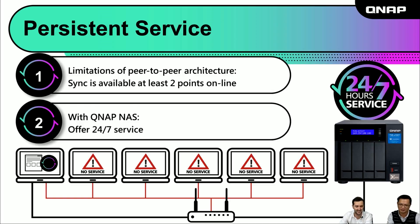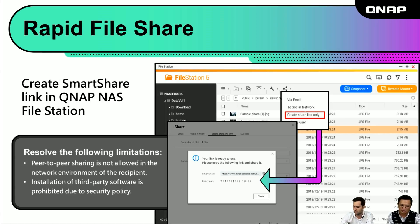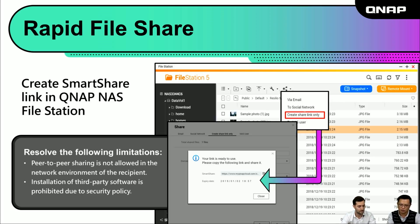File sharing is a very important element of synchronization. ResilioSync has its own link to share files, but in some scenarios it may not be convenient — for example, if the target user is in an environment that doesn't allow P2P protocol, or the user cannot install the software due to security issues, especially in the financial industry. In these cases, we can generate a smart sharing kit in QNAP NAS. This function is available in File Station — we can create and share it from there.